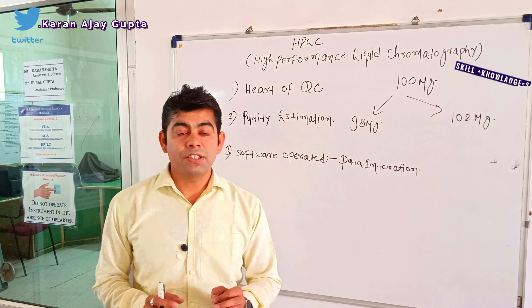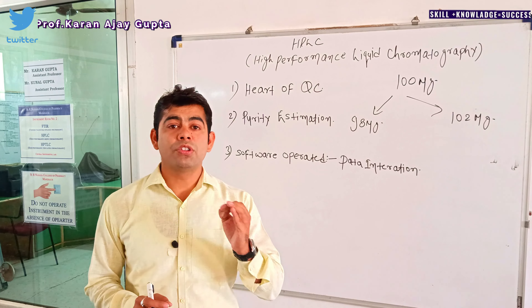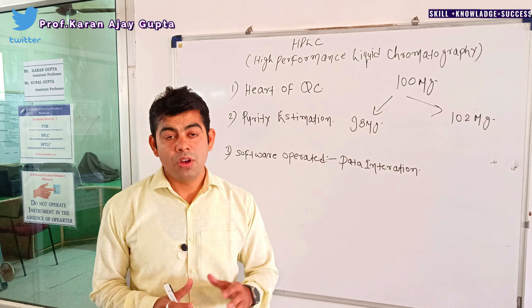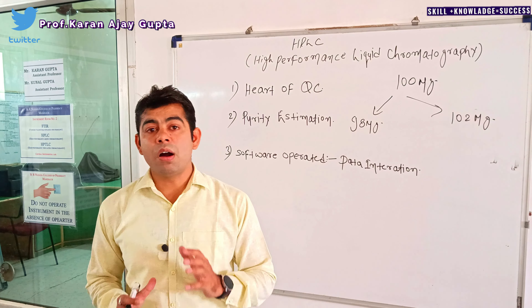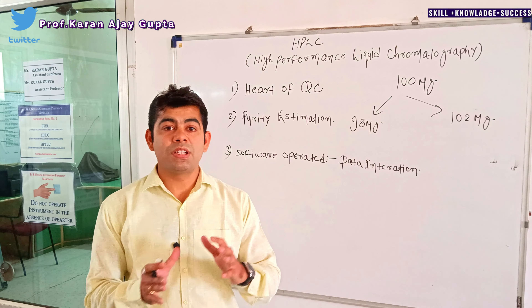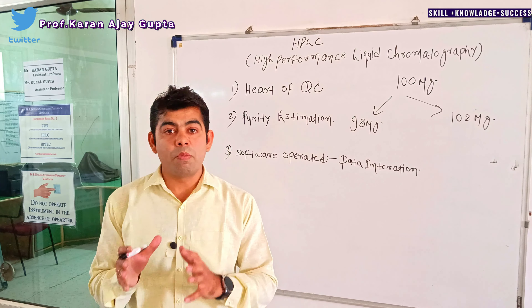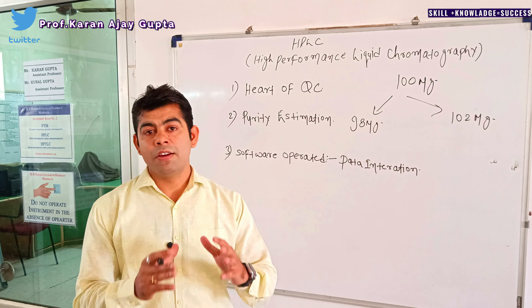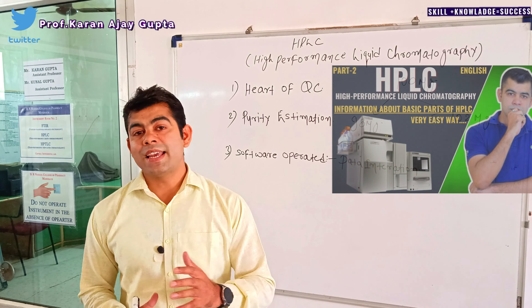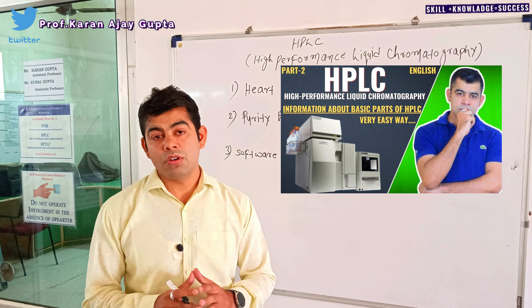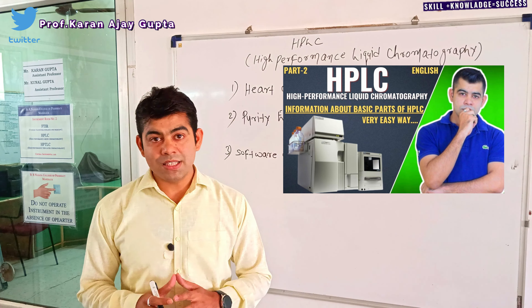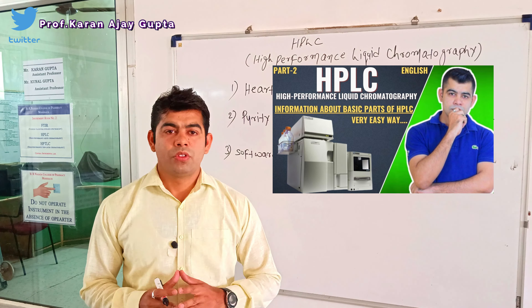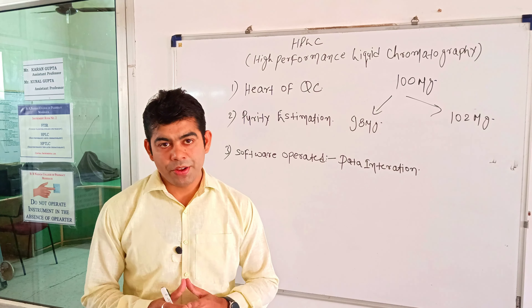So HPLC is one of the most precise and accurate instruments for the estimation of drug quality, drug impurity, and drug purity — that is why HPLC is one of the most important instruments and is called the heart of the quality control laboratory. In this part, we talked about what is HPLC, the principle of HPLC, what is chromatography, and why HPLC is the most important instrument in the pharmaceutical industry. In the second part, we will discuss the instrumentation of HPLC — the parts like pump, column, and detectors. Thank you for watching.